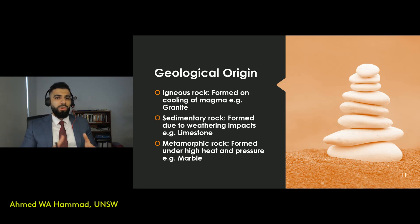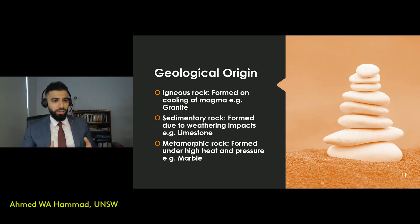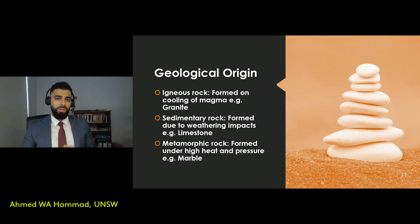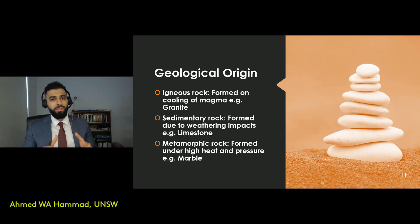Another classification system relies on the geological origin of the aggregates. You have igneous rocks, which are formed from magma — granite is an example. You have sedimentary rocks, which are formed due to weathering, where particles break down and deposit elsewhere, accumulating over the years — limestone is an example. And then you have metamorphic rocks, which are formed under high heat and high pressure — marble is an example.